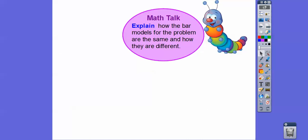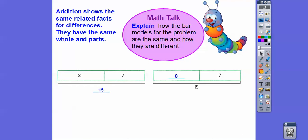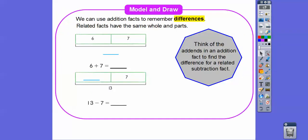So explain how the bar model shows the problems that are the same and how they're different. Addition shows the same related fact for subtraction — differences is a fancy name for subtraction. So here's eight plus seven equals fifteen, and when we took away eight, it gave us seven. We can use addition facts to remember subtraction facts.